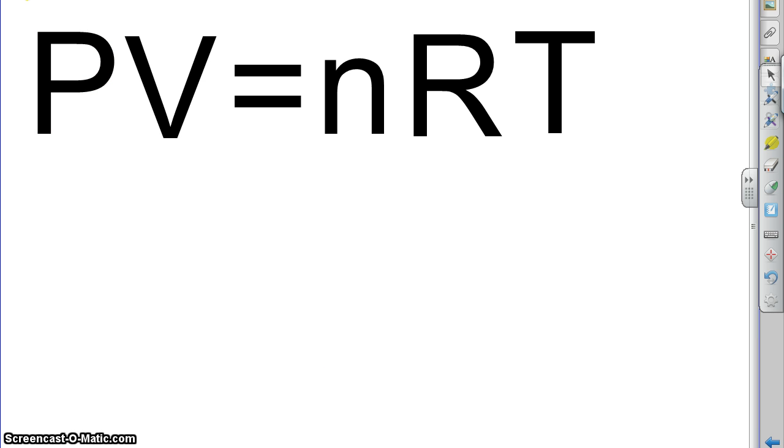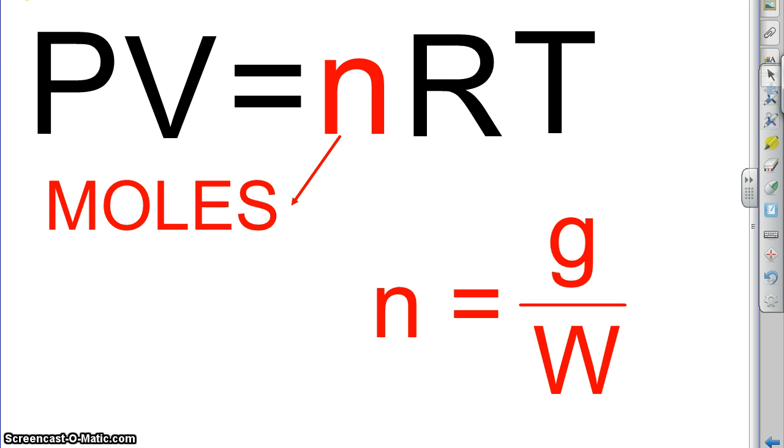So, next, what next? Well, next let's talk about moles. N stands for moles. And moles equals G over W. Either the moles will be given or they'll ask for moles or you might have to use the G over W formula, where W is the molar mass. So, that's pretty straightforward.